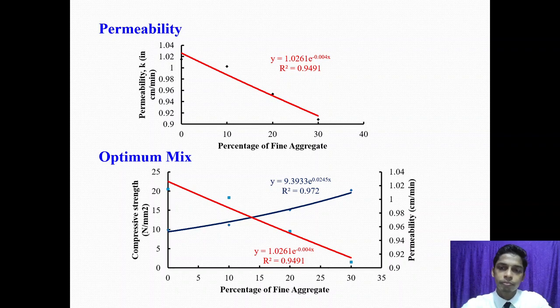Permeability. The above graph represents the variation of permeability with respect to the percentage of fine aggregate. From this graph, we observed that with the increase in percentage of fine aggregate, the permeability of concrete decreases. Permeability varies from 0.9 cm per minute to 1.01 cm per minute. This happened due to decrease in void content inside the pavement structure, due to addition of fine aggregate.